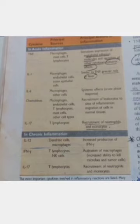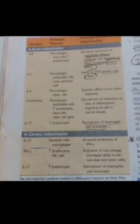Tumor necrosis factors and interleukins are stimulated by microbial products, foreign bodies, and necrotic cells. Tumor necrosis factors also regulate energy balance by promoting lipid and protein catabolism and by suppressing appetite.